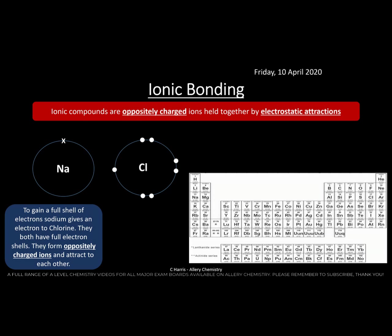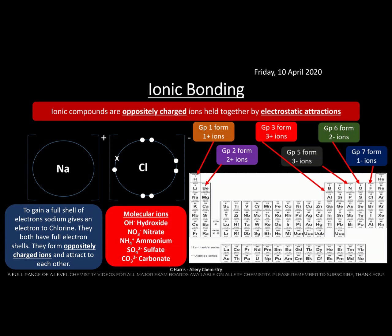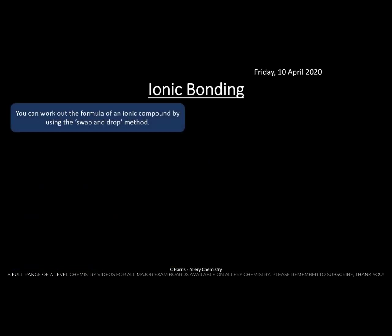Sodium now has a positive charge and chlorine has a negative charge. Look back at video one for more information about how ions are formed. Different groups in the periodic table produce different types of ions. We also need to know molecular ions. Depending on which group you're in determines which type of ion you'll get.